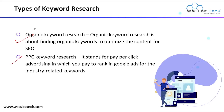Now we have two types of keyword research. The first one is organic keyword research. In organic keyword research, it is about finding organic keywords to optimize your content for SEO. Optimized keywords mean you don't need to pay any amount to the advertiser — these are completely free keywords which you can use on your website to rank on Google's search engine result page.